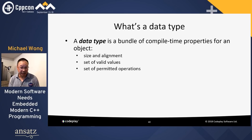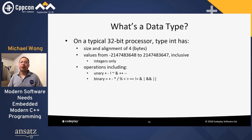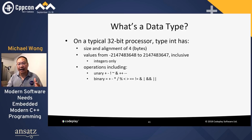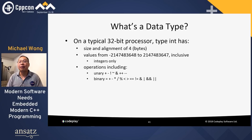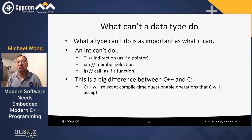In C++, unlike C, a data type is a bundle of compile-time properties including size and alignment, a set of valid values, and a set of permitted operations. On a typical 32-bit processor, type int has size and alignment of four bytes, a value range from a very small negative to a very large positive number, picking only integers. Importantly, an integer cannot do indirections like a pointer, member selection, or function calls. C++ rejects at compile time all these questionable operations that C would accept.